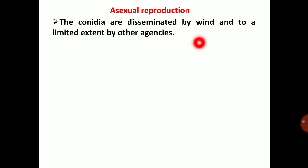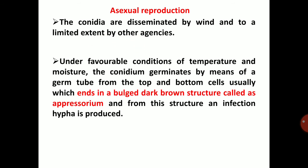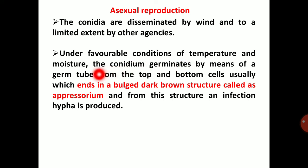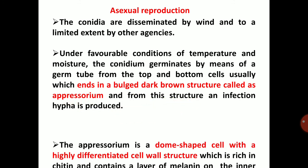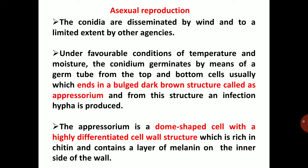The conidia are disseminated mainly by wind and to a limited extent by other agencies. Under favourable conditions of temperature and moisture, the conidia germinate by means of a germ tube from the top and bottom cells, which typically ends in a bulged dark-brown structure called the appressorium, from which infection hyphae are produced.